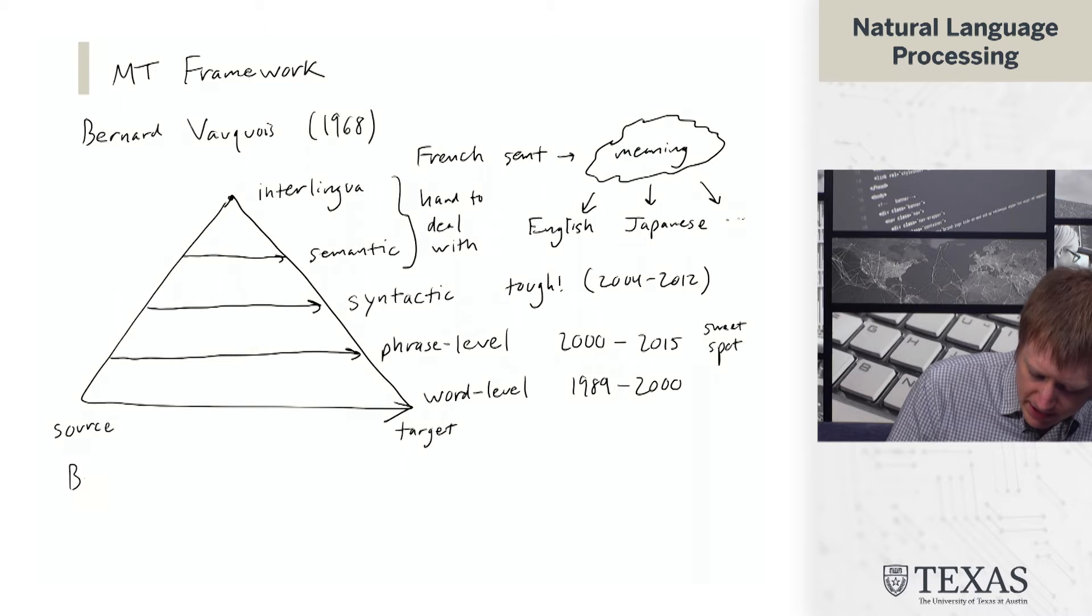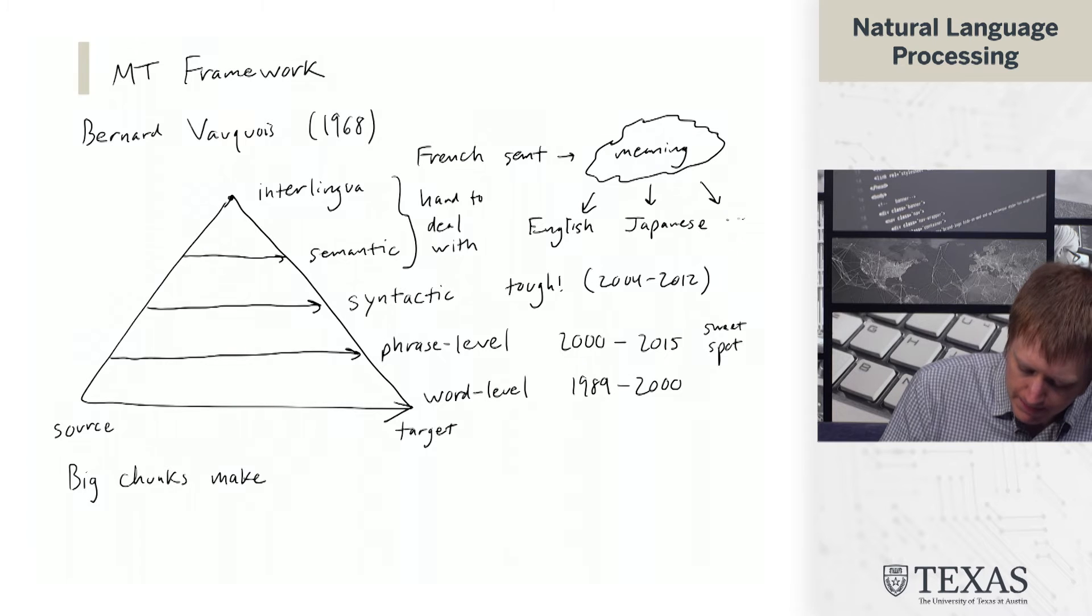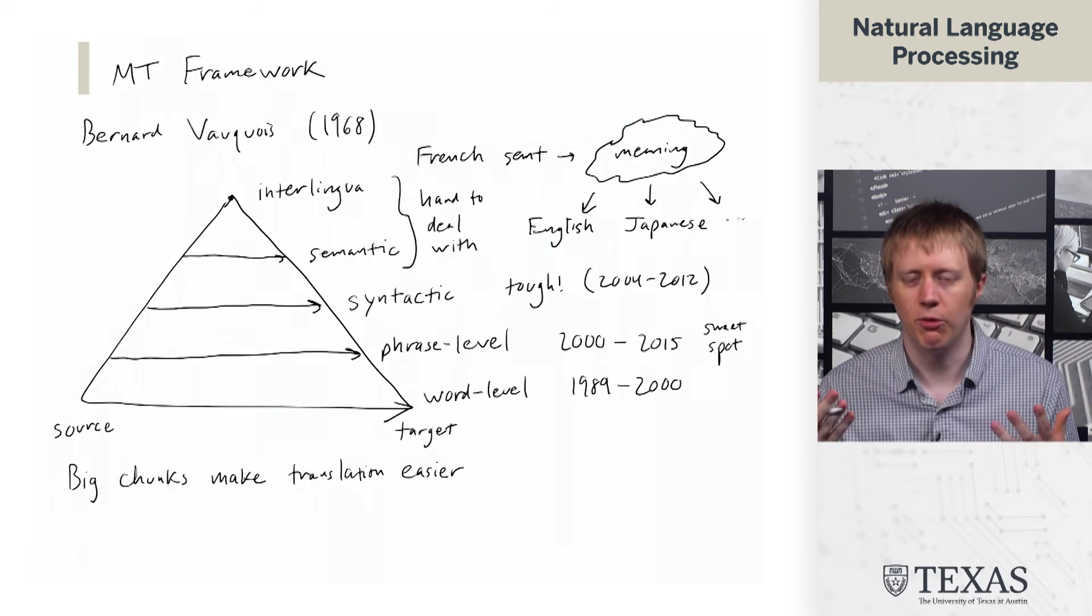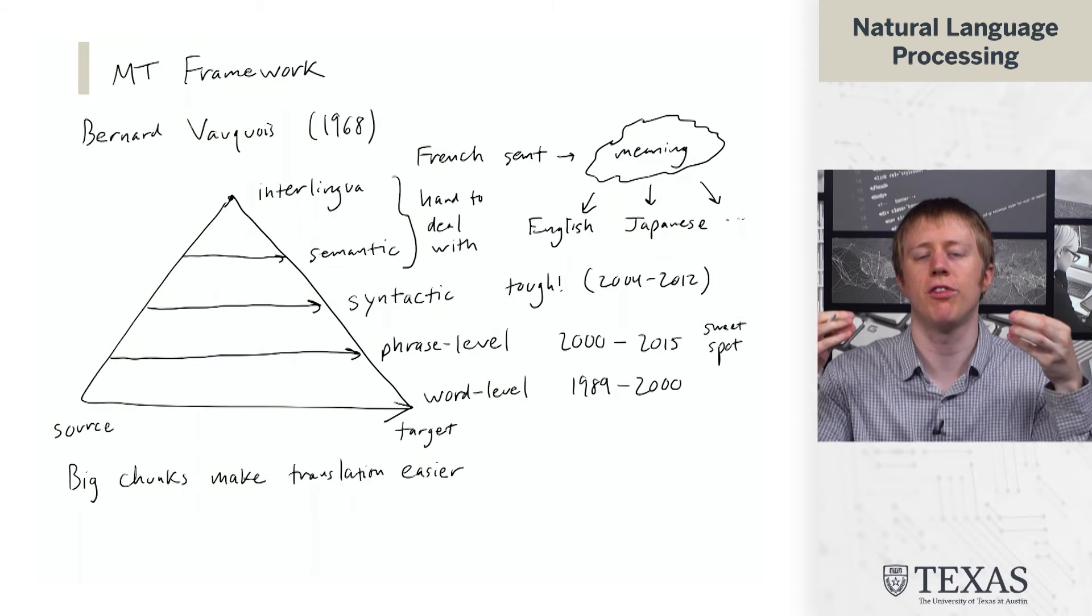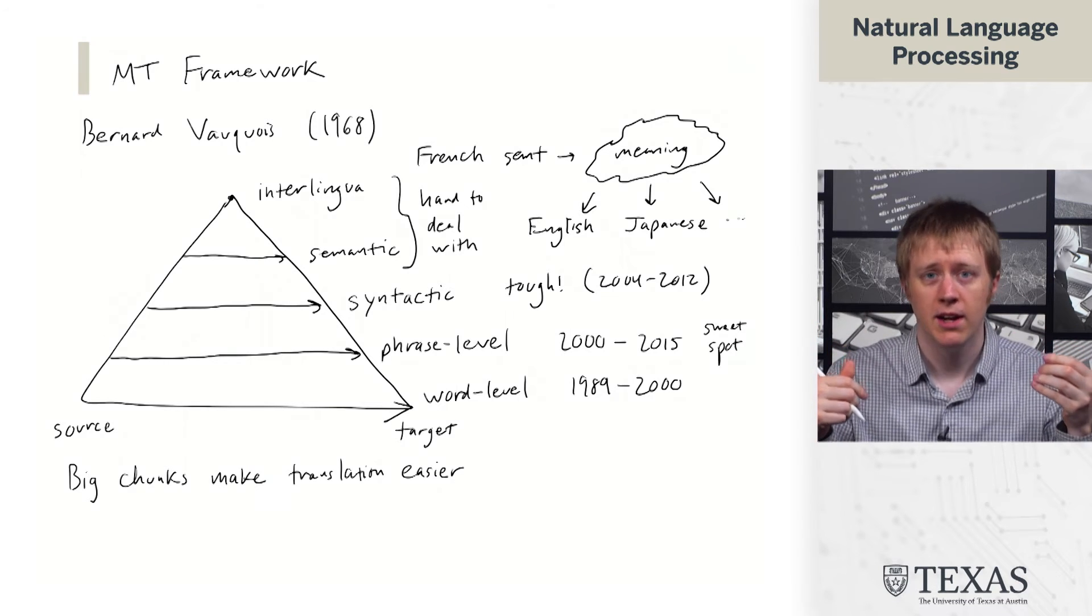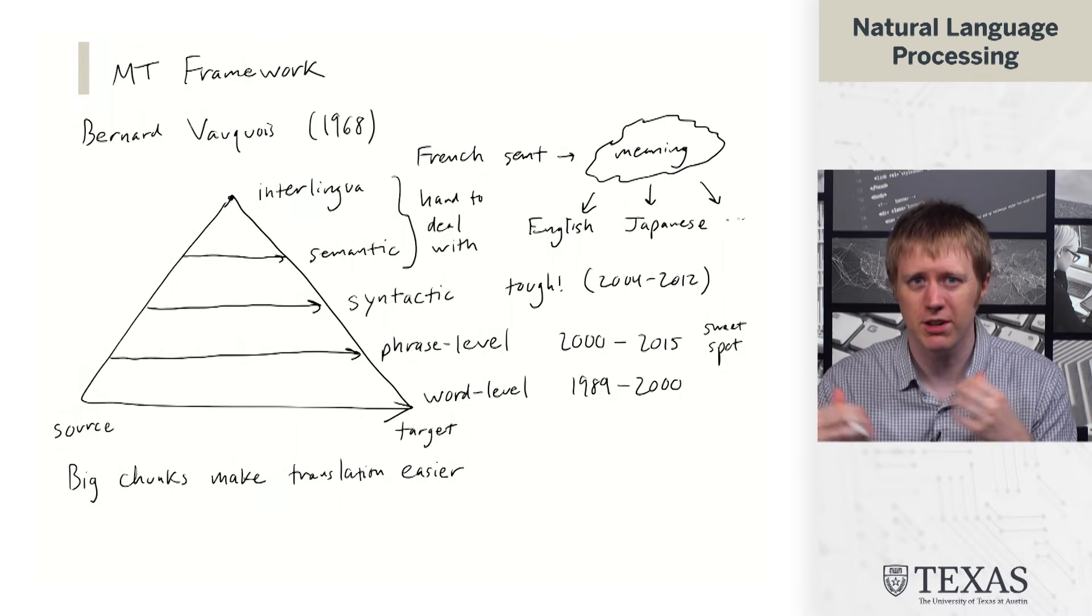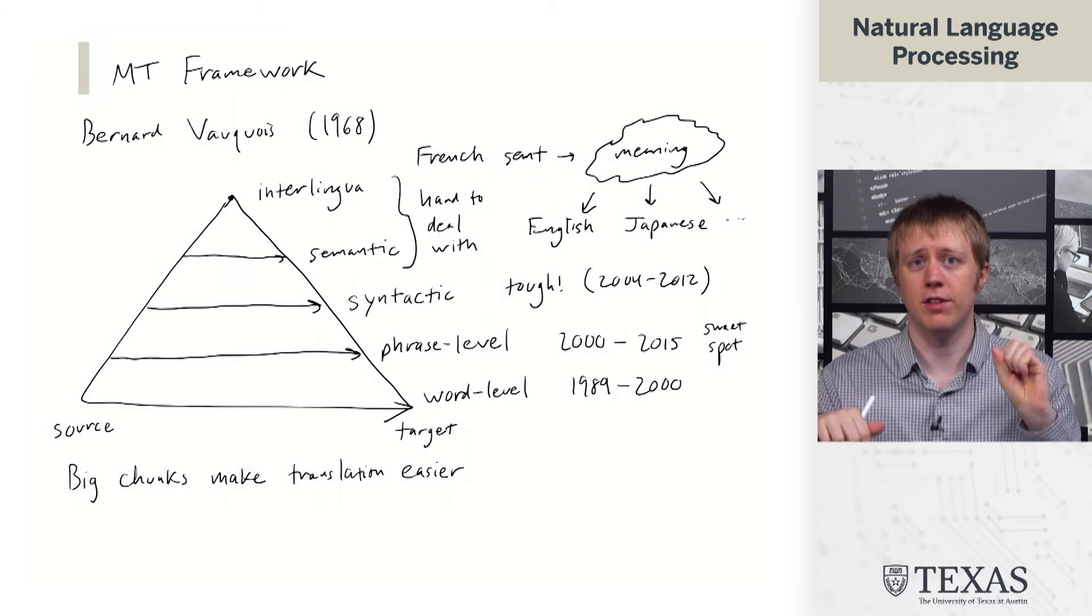So the basic idea is that big chunks make translation easier. One way to illustrate this is just imagine that you have a whole sentence given to you and you've seen that whole sentence in your training data. You should just return the translation that someone gave you before, unless there's something in the context that tells you you should do something different. That's a very good baseline.